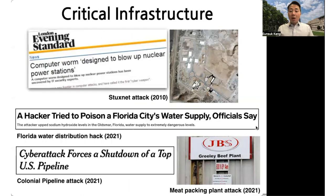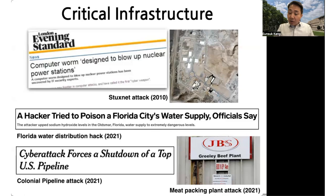Another type of system we should be worried about is critical infrastructure. Within the U.S. and around the world, recently there have been a number of attacks on nuclear plants, water supply chains, oil pipelines, and other critical infrastructure systems that our society relies on. For example, in 2021, a hacker in Florida was able to take over the software within a water supply plant and try to poison the water consumed by citizens. Fortunately, the attack was discovered before it was carried out.